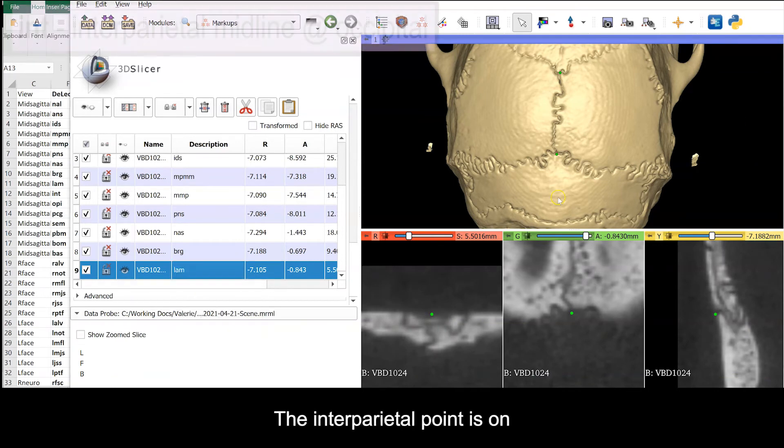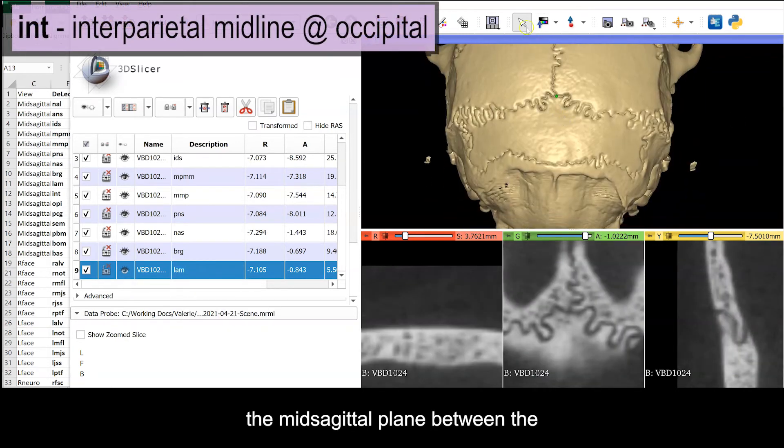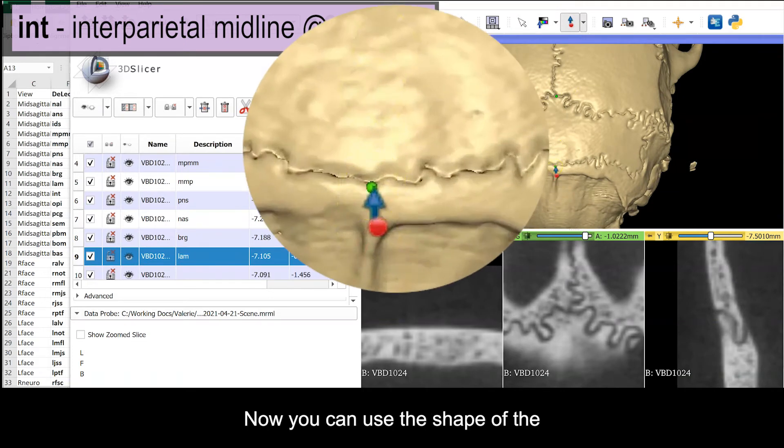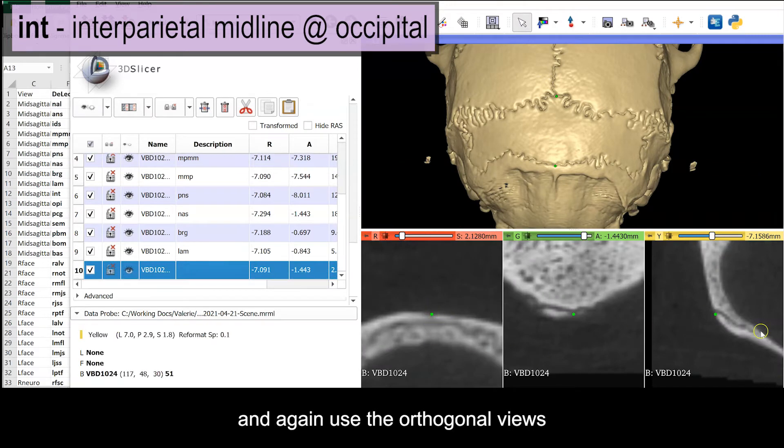The interparietal point is on the mid-sagittal plane between the interparietal and occipital bones. You can use the shape of the nuchal lines to identify the midline, and again use the orthogonal views to confirm that the landmark hasn't fallen into the suture.